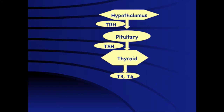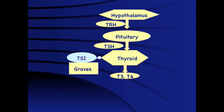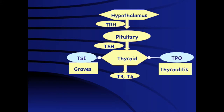Looking at the hypothalamic-pituitary-thyroid axis, the two most common causes of thyrotoxicosis in children are stimulation of the thyroid gland by thyroid stimulatory immunoglobulin (TSI) in Graves disease, or damage of the thyroid gland by thyroid antibodies in thyroiditis. Distinguishing these two is extremely important because antithyroid drugs are required in Graves disease but would be detrimental in thyroiditis.